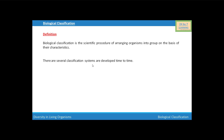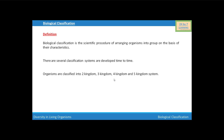There are seven classification systems developed time to time. Living organisms are classified into various types of kingdom systems. Number one is two kingdom system, second one is three kingdom system, third one is four kingdom system, and the last one is five kingdom system.